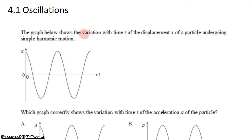We have a graph that shows the variation with time t of the displacement x of a particle undergoing simple harmonic motion. And we see that the particle starts up high, falls low, goes up high again, falls low again. It's oscillating over time.